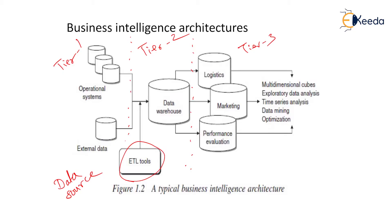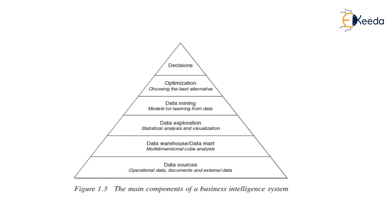Tier 3 is one of the business intelligence methodology tiers where we actually apply proper methods and analysis models to make a decision. Through this we can take an accurate decision because we have data in a structured format.